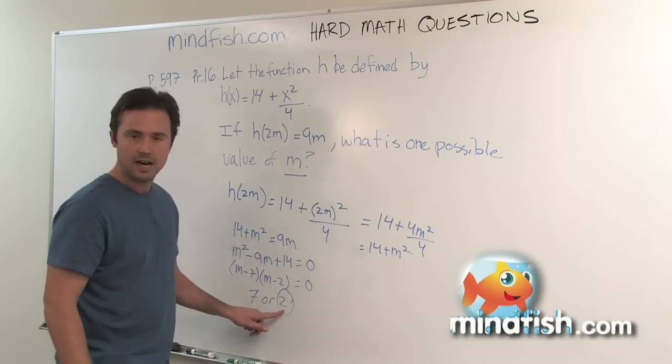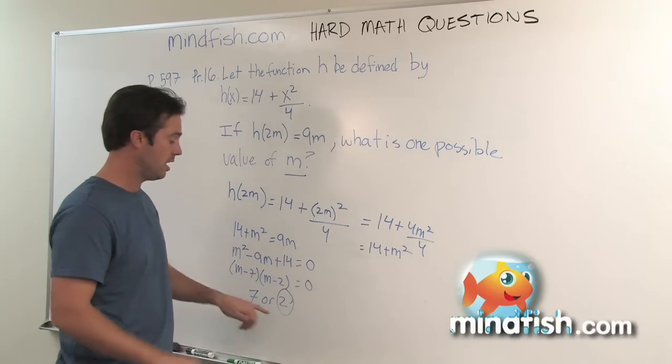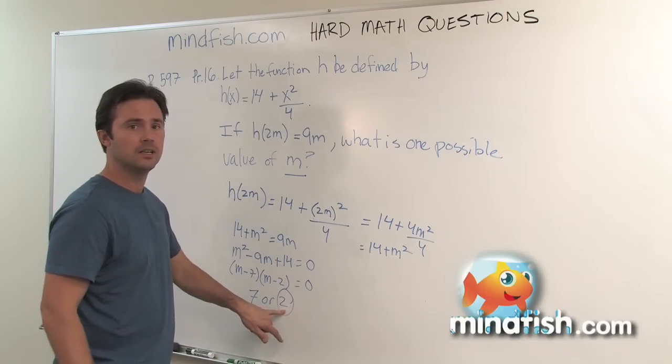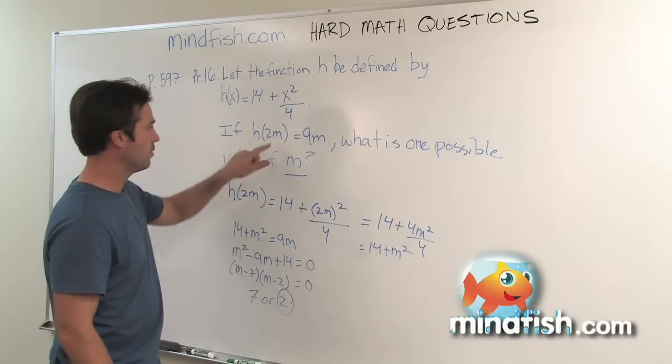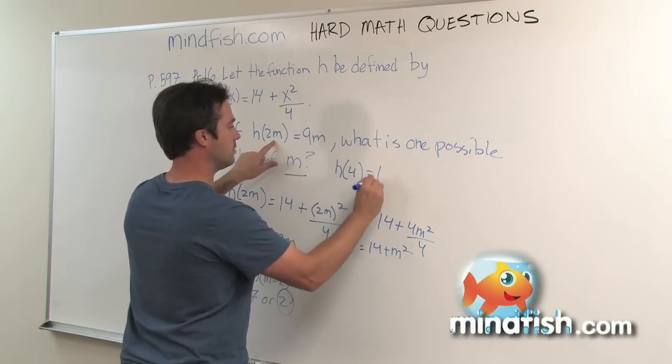Now, if you had time, and you weren't rushed, or let's say you had finished the section, had a few minutes left, great chance to use your time to double check that answer. So if the answer is 2, what are we really saying? We're saying h(4) is equal to 18.